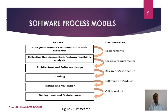This is a typical software process model. In the first phase, you can see the idea generation or communication with the customer. If the customer wants us to be productive, we can gather the customer's requirements — the product features, software functionality. In this case, we identify the requirements.